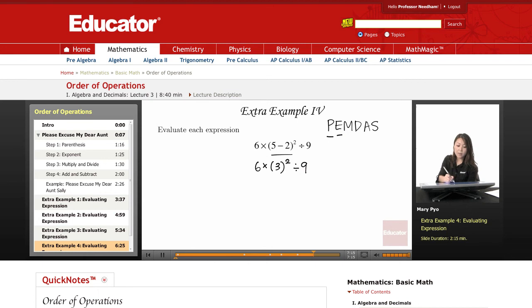So since I have an exponent right here, I'd have to solve this out before I do anything else. So this is going to be 6 times. This, remember, is 3 times 3. 3 squared is the same thing as 3 times 3. And 3 times 3 we know is 9.